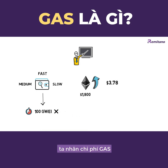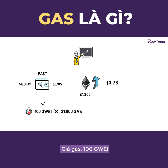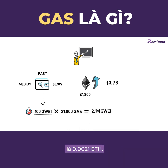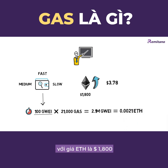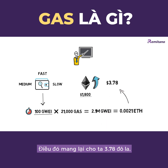We multiply the gas cost for sending a transaction — 21,000 gas — by the gas price of 100 Gwei. This equals 2.1 million Gwei, which is 0.0021 ETH. At the ETH price of $1,800, that gives us $3.78.